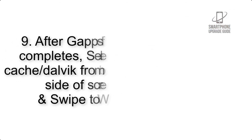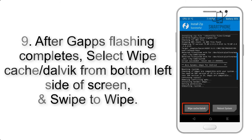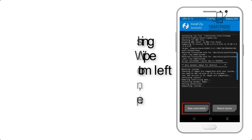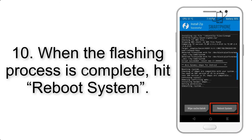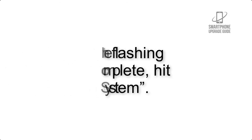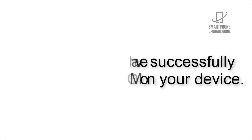Step 8: Flash the GApps zip package in the same manner. Step 9: After GApps flashing completes, select Wipe Cache and Dalvik from the bottom left side of the screen and swipe to wipe. Step 10: When the flashing process is complete, hit Reboot System. That's it — you have successfully installed the ROM on your device.